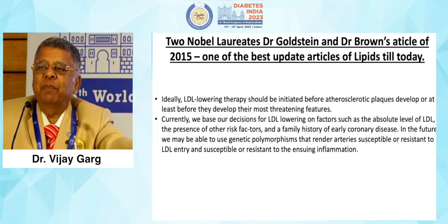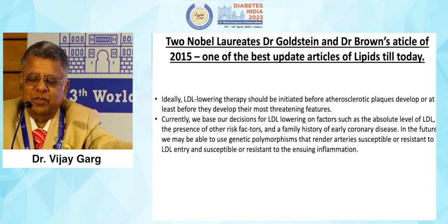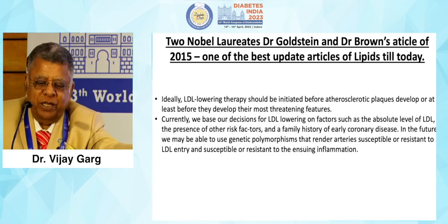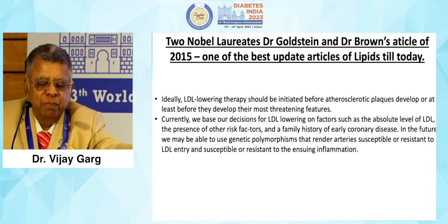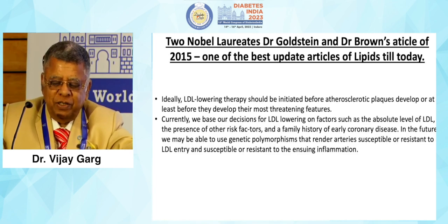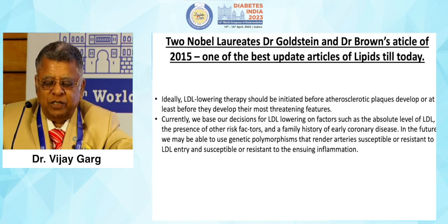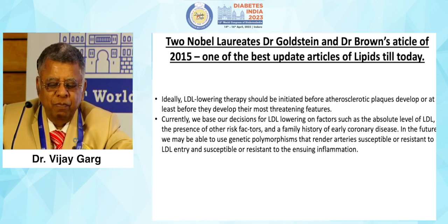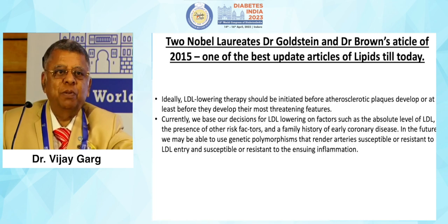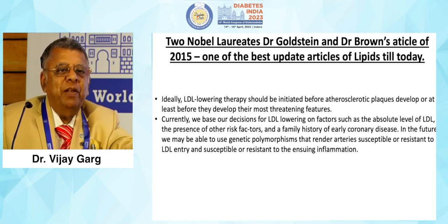Regarding statins in primary prevention — a landmark 2015 article by Nobel laureates Dr. Goldstein and Dr. Brown states: ideally, LDL-lowering therapy should be initiated before atherosclerosis develops, or at least before it becomes most threatening. All patients with atherosclerotic problems should get statins. Currently we base decisions on absolute LDL level, presence of other risk factors, and family history of early CAD. In the future, genetic polymorphisms may help identify susceptibility. This 2015 article recommends statins for primary prevention in all.